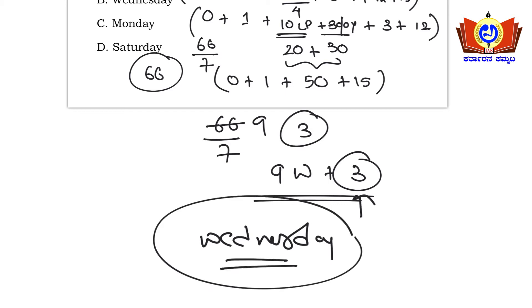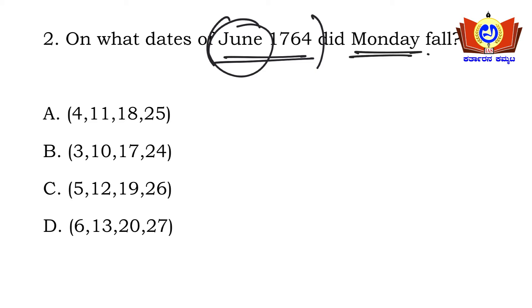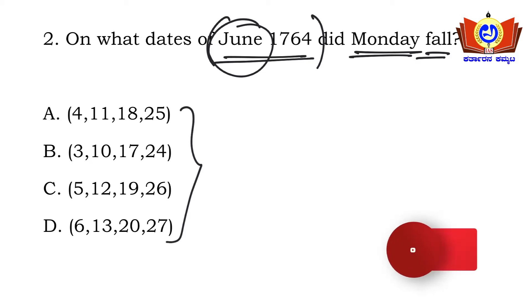Moving on to the next question: on what dates of June 1764 does Monday fall? Options given are 4th, 11th, 18th, or 25th. 1764 can be written as 1600 + 100 + 60 + 3 years, then we add January, February, March, April, May, and up to June 1st.